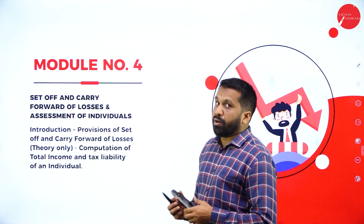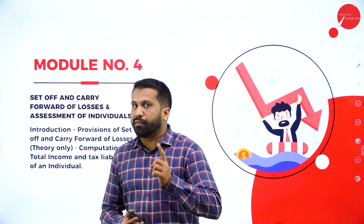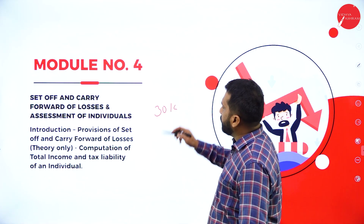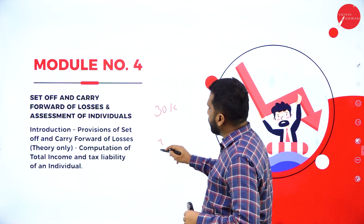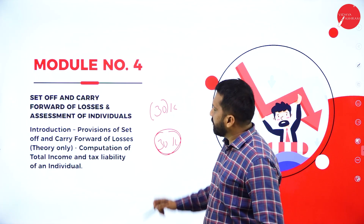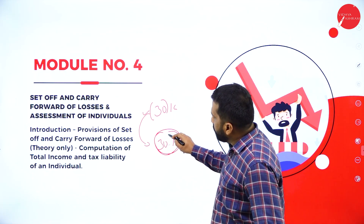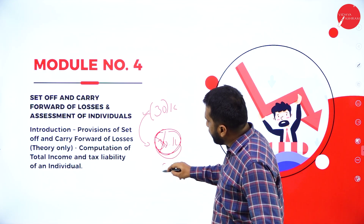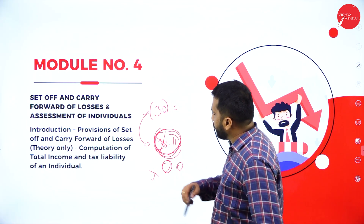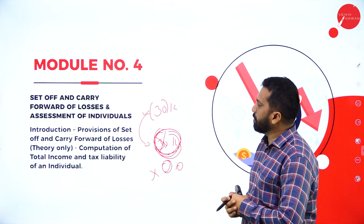Now applying this to income tax: whatever losses occurred in the previous year can be carried forward to the next year. For example, last year you started a business and had a loss of thirty thousand. Next year your profit is thirty thousand. You don't need to pay tax on that profit because you carry forward last year's loss, set it off against this year's profit, and your taxable income becomes zero. This is carry forward and set-off.